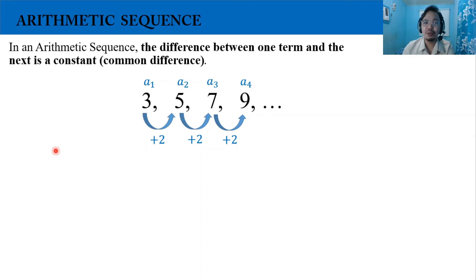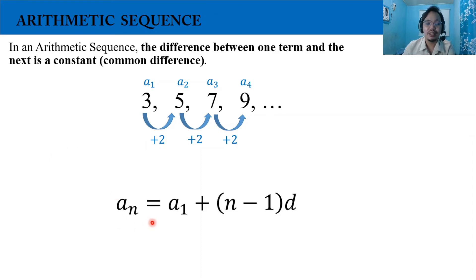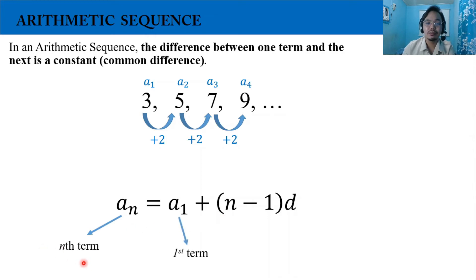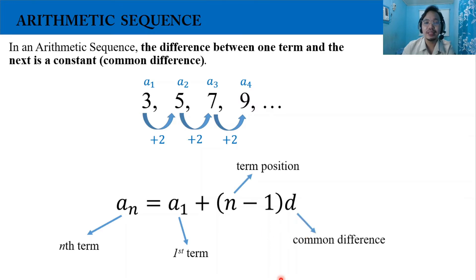Now let's have the formula for arithmetic sequence. It is a_n equals a_1 plus the quantity n minus 1 times d, where a_n is the nth term, a_1 is the first term, n is the term position, and d is the common difference.